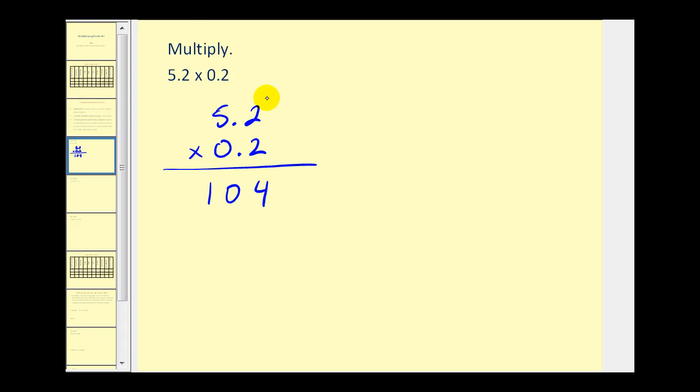Next, this number has one digit to the right of the decimal, and this one also has 1. 1 plus 1 equals 2, so this product must have two digits to the right of the decimal. Starting on the right, we'll count over two digits to the left: one, two. So this product is equal to 1.04 or 1 and 4 hundredths.